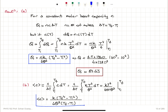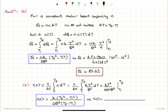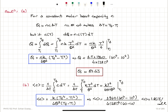Now plugging in the numbers: the average molar specific heat = 1940 × (40⁴ − 10⁴) / (4 × 281³ × (40 − 10)). This gives an average molar specific heat of 1.86 joules per mole Kelvin.